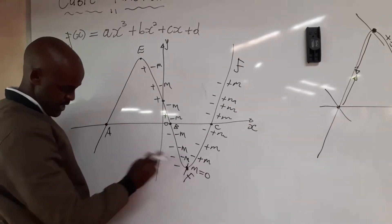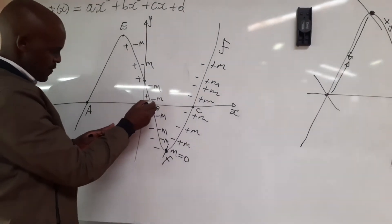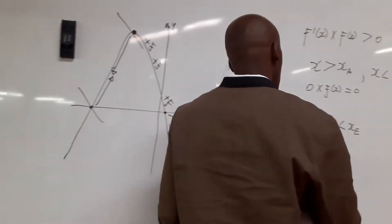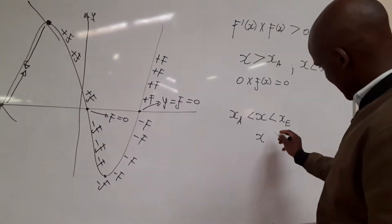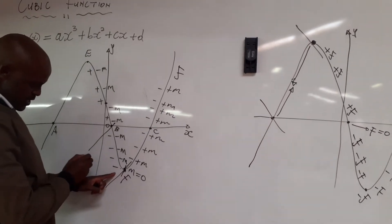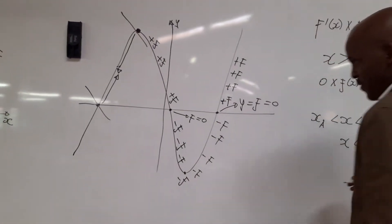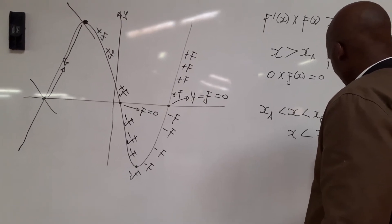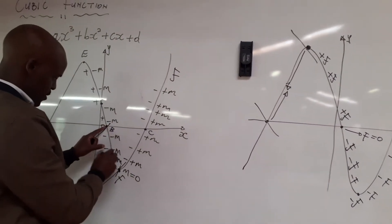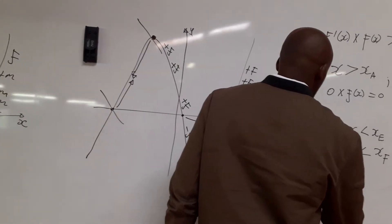Where we start to have negative times negative — that's below point b. Remember, point f is not included because the gradient is zero there, so it's up to when x is less than x at f. Since x increases when moving right, x is less than x at f but greater than x at b.